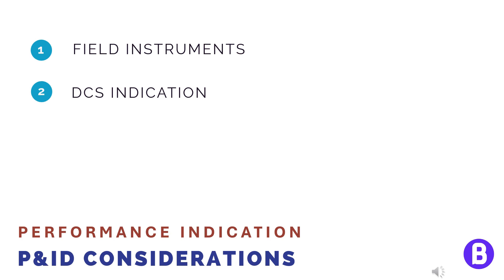And if there is a parameter that is having an extreme value — higher or lower than the allowable value — then we shall send an alarm to the operator in the control room.